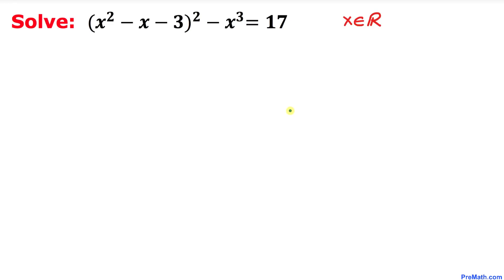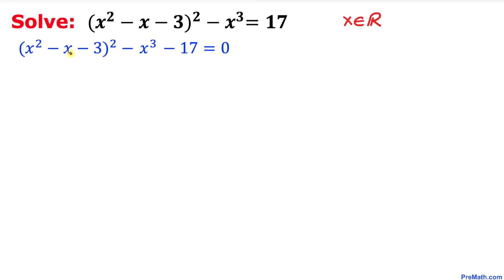The very first step we are going to do is move this 17 to the left-hand side. That becomes negative 17. Now let's focus on this negative 17 — we could write it as negative 16 and negative 1.